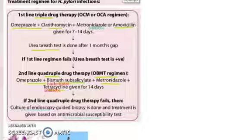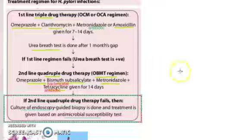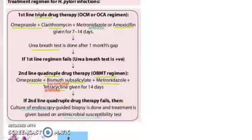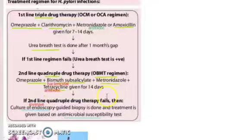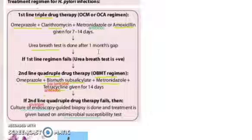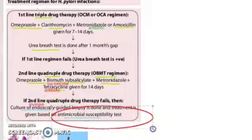Again, you will check whether there is improvement or not. If it fails — meaning the urea breath test fails again — you will do an endoscopy-guided culture. That is invasive. You will do an endoscopy-guided biopsy, and then you will also do an antimicrobial antibiotic susceptibility test, after which you will give new drugs. Remember, for every lab diagnosis, you should write antibiotic susceptibility testing.